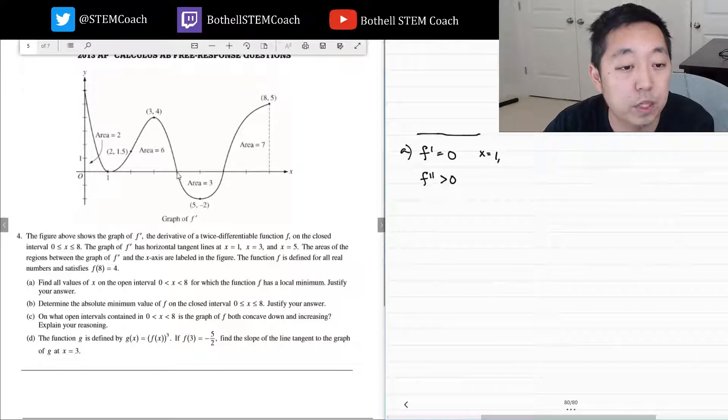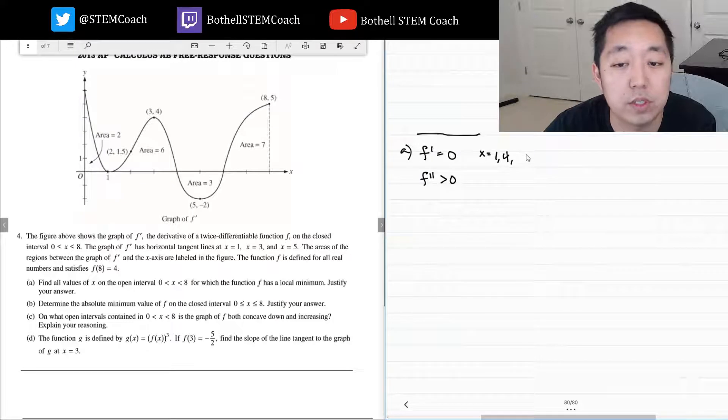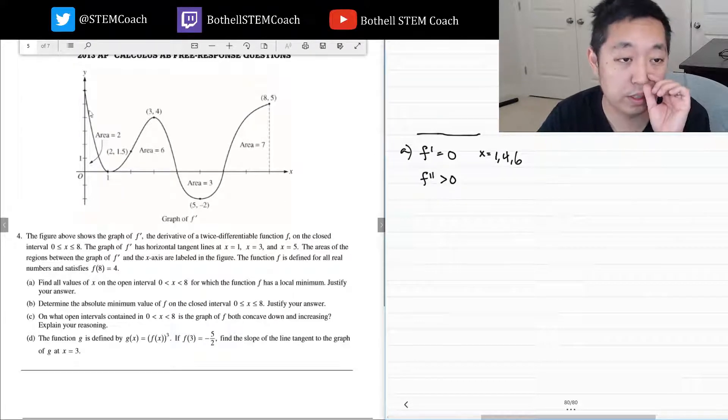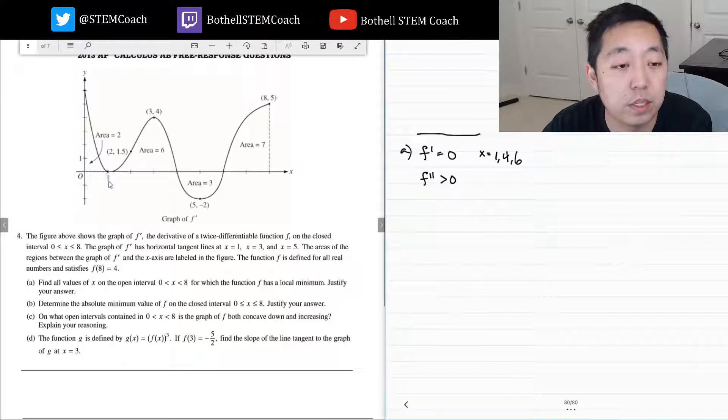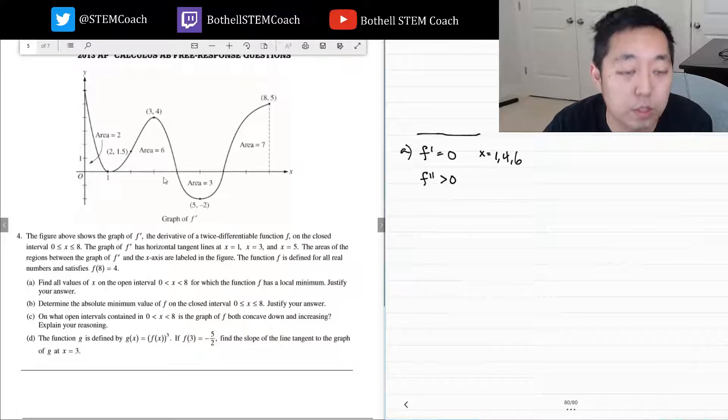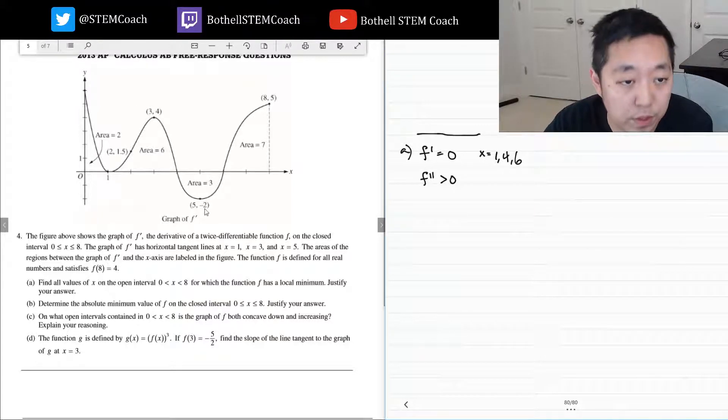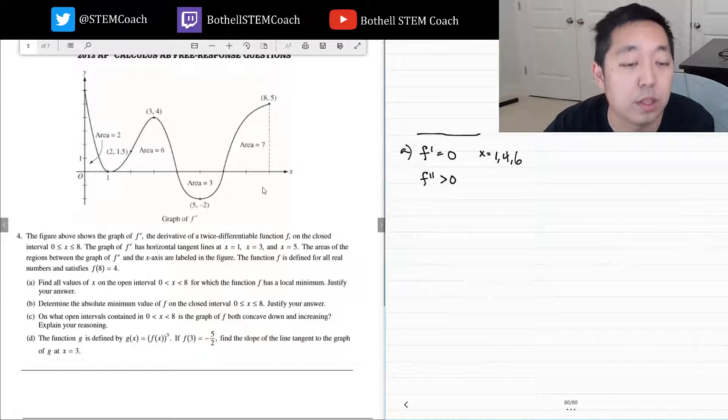X equals 1, 4, and 6. That's when the first derivative is 0 because this is the graph of the first derivative. It's when it hits the x-axis. Now when does the second derivative be greater than zero? The second derivative would be the derivative of this graph, so it would be the slopes of this graph. The derivative of this is the second derivative, the slopes, and that only happens at x equals 6.